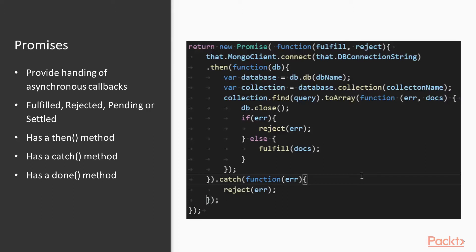In Node.js, promises provide handling of asynchronous callbacks and they have four states: fulfilled, rejected, pending, or settled. When an asynchronous method is called and finally returns later, the 'then' method gets fired. If there happens to be an error in the asynchronous call, the 'catch' method allows you to catch and handle those errors. And when there is a final settling of the promise, the 'done' method gets fired as well.